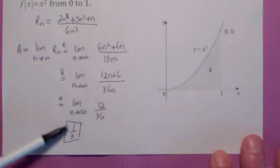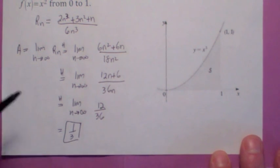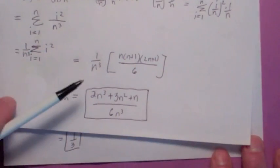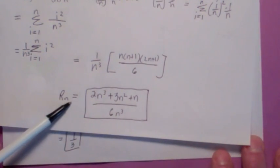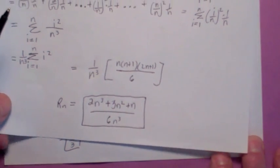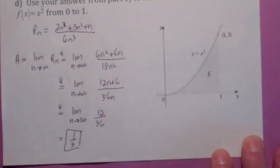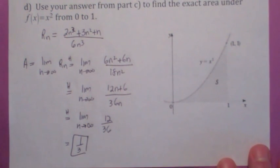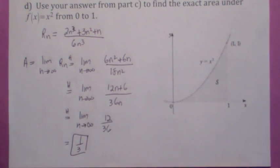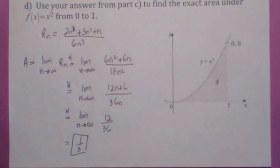So this is how we're going to do it: find an expression for R sub n, the sum of the areas of the rectangles in terms of n — that's the hard part — then take the limit as n goes to infinity and call that the area under the curve. We're going to be doing that a lot in the next couple of days, so if you had trouble following this, don't worry.